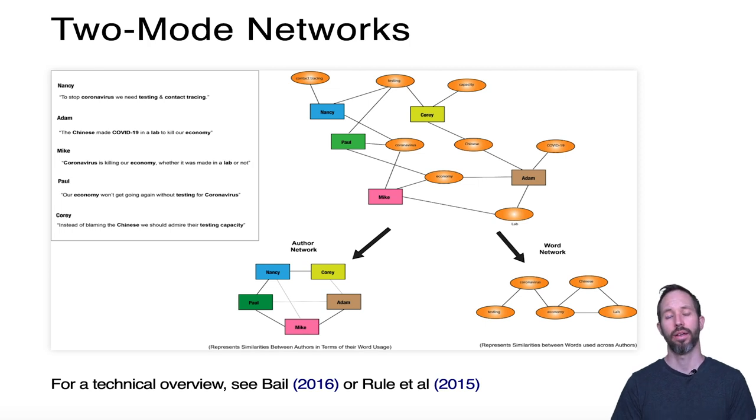Now on the other hand, if you wanted to do something closer to topic modeling and you wanted to cluster words into latent themes or topics, then you might want to follow with a word-based projection of the network, or what you might call a word network. On the lower right-hand side you'll see here that these groups of people have cohered into two ways of talking about coronavirus: either it's a threat that requires extensive testing to overcome in order to avoid economic harm, or the economic harm resulted from an intentional strategy by the Chinese government to create coronavirus in the lab.